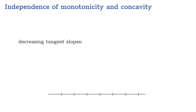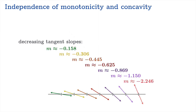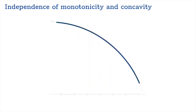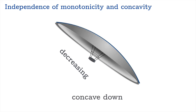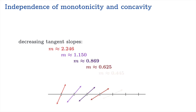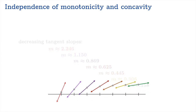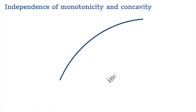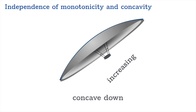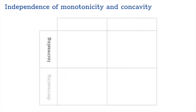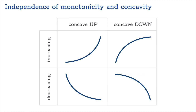Conversely, imagine a bunch of negative slopes that are actually decreasing — that produces a decreasing graph that is concave down. And having positive tangent slopes that are decreasing gives a graph that is both increasing and concave down. The point is that monotonicity gives you either increasing or decreasing, and concavity gives you either concave up or concave down — all four combinations are possible. Never assume that a concave-up graph is necessarily increasing; concavity and monotonicity are independent of each other.